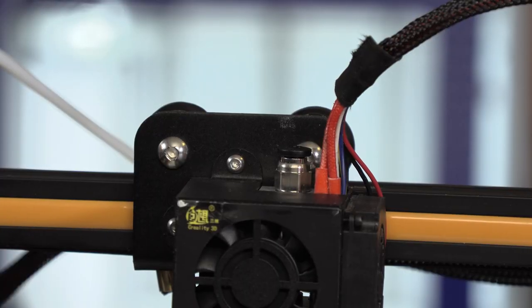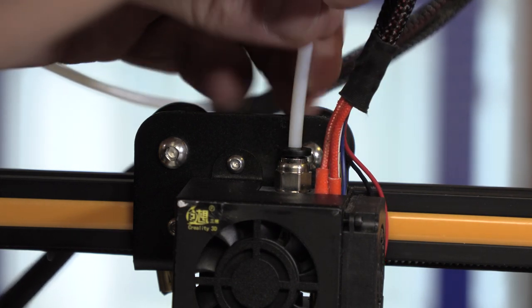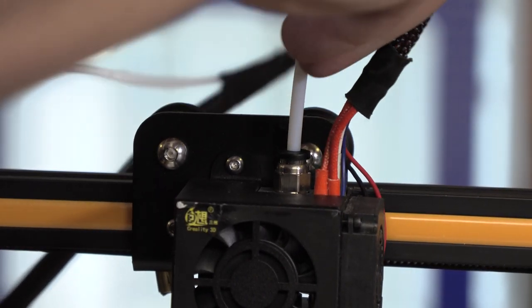With the fan shroud on, go ahead and insert the PTFE Bowden tube into place. Remember, this is an all metal hotend, so the PTFE Bowden tube doesn't need to slide that far down. Put it in until it stops, and then you're done.